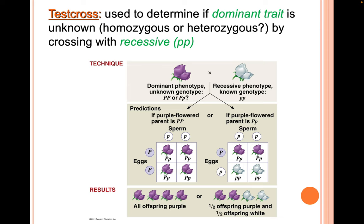A test cross is used to determine if the dominant trait genotype is unknown. If we don't know whether the parent with the dominant phenotype is homozygous or heterozygous, we breed that individual with a recessive homozygote. If we only see dominant phenotypes in the offspring, the parent must be homozygous dominant. If we see a 50:50 split of dominant and recessive phenotypes, then that individual must have been a heterozygote.